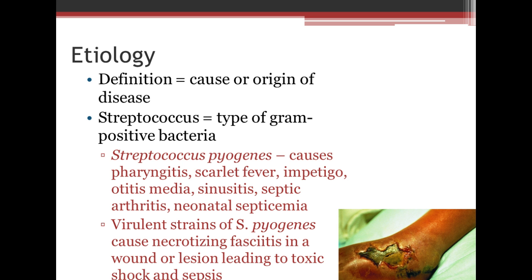Streptococcus is a type of gram-positive bacteria, which means it stains deep violet when you look at it under the microscope. Coccus means round or circle. Streptococcus pyogenes is the one we're most familiar with — it causes pharyngitis, scarlet fever, otitis media, sinusitis, septic arthritis, and neonatal septicemia. That is the one that gives you that horrendous sore throat that sends a lot of people to urgent care with their children. There are also virulent strains of S. pyogenes which cause necrotizing fasciitis — the flesh-eating bacteria — which can cause serious wounds and lead to toxic shock and sepsis, as shown in the picture in the bottom right-hand corner.